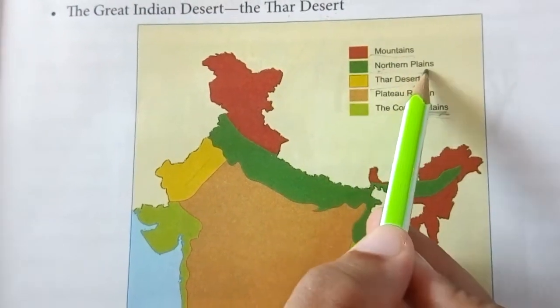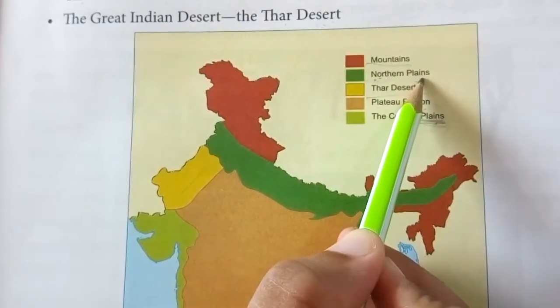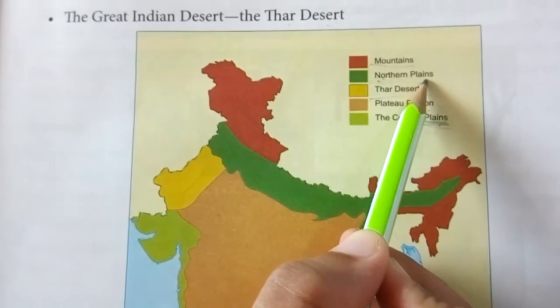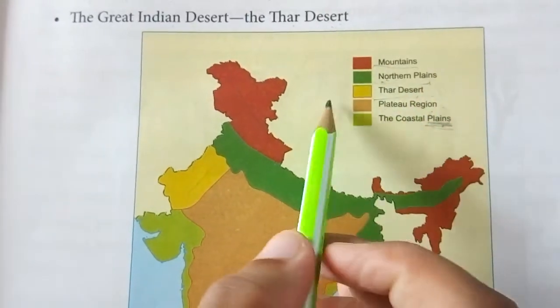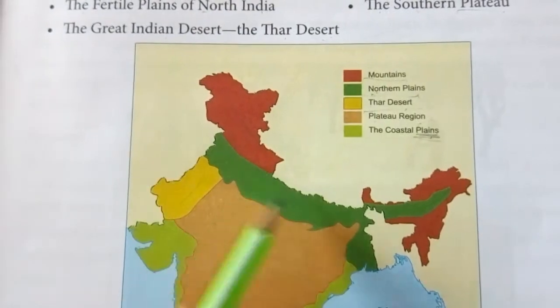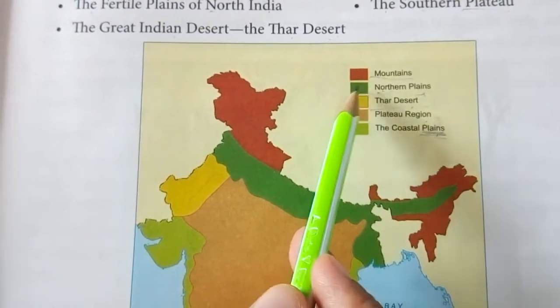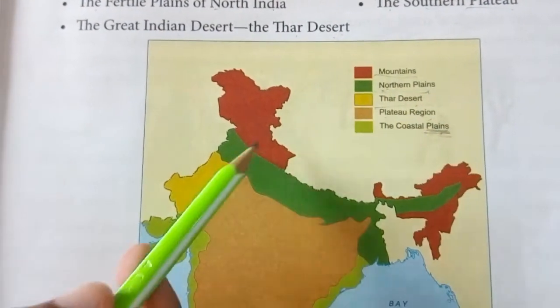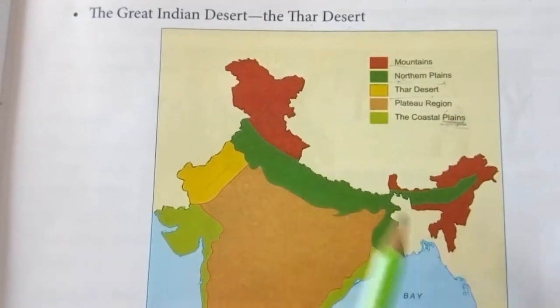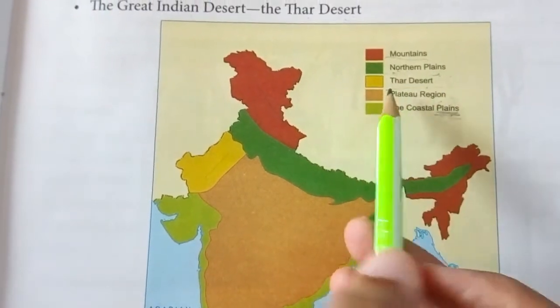Now, Northern Plains — what are Northern Plains? Here you can see, Northern Plains is shown in dark green colour. This entire dark green area is Northern Plains.